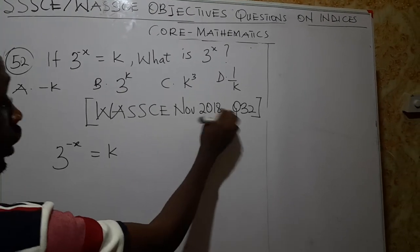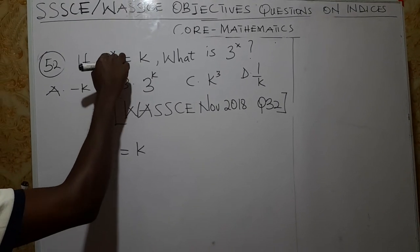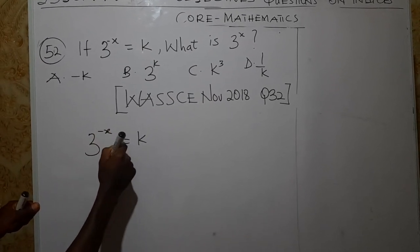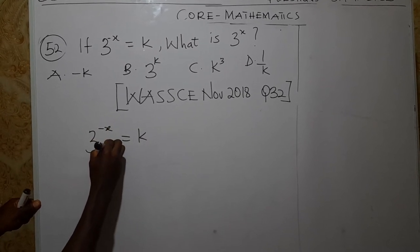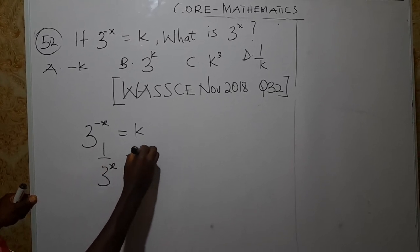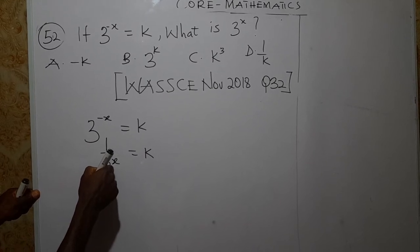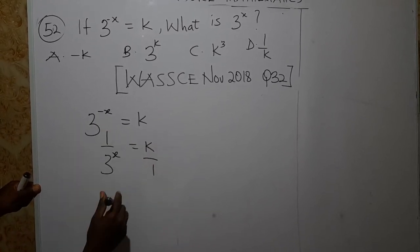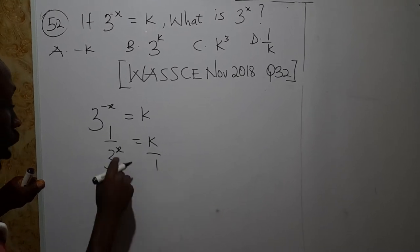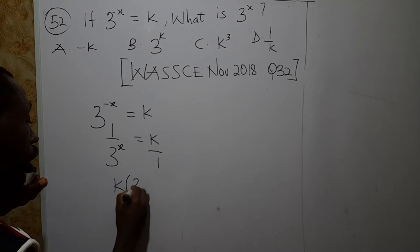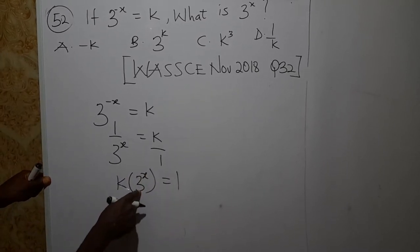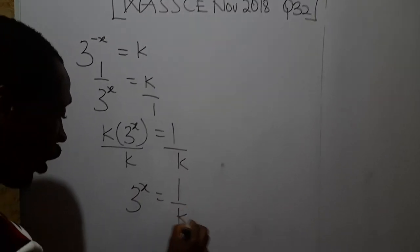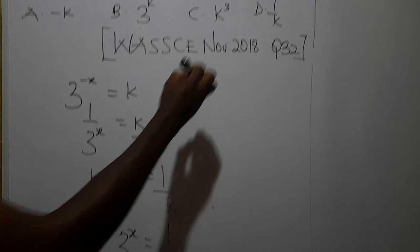WASSCE November 2018, objective question number 32: if 3^(-x) = k, what is 3^x? Since 3^(-x) = 1/3^x = k, cross-multiplying gives 3^x · k = 1, so 3^x = 1/k. The correct answer is D.